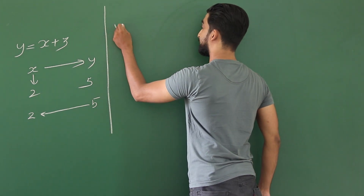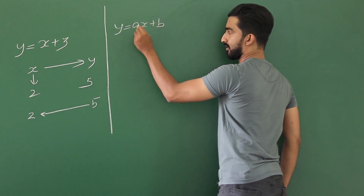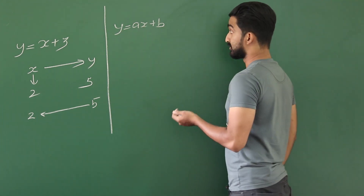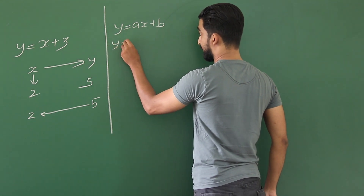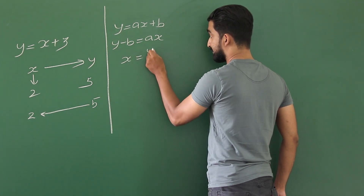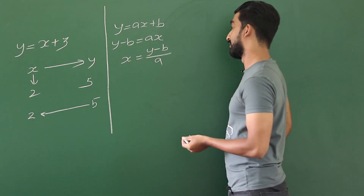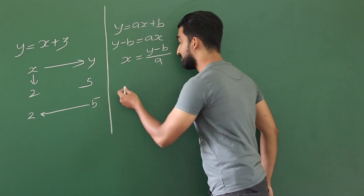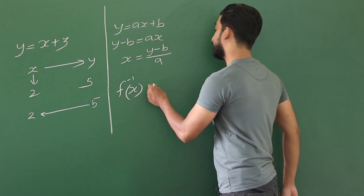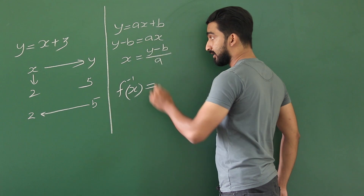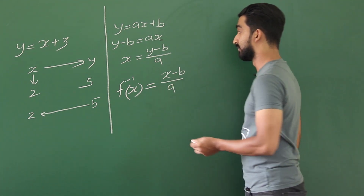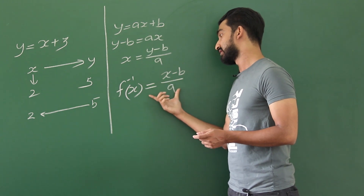Now let's consider the function y equals ax plus b. To find the inverse function, we subject x. We send b to the other side, so it is y minus b equals ax. Then x equals y minus b over a. Instead of x we substitute f inverse of x, which we call the inverse function, and instead of y we substitute x. So this gives x minus b over a. If this is the function, the inverse is x minus b over a.